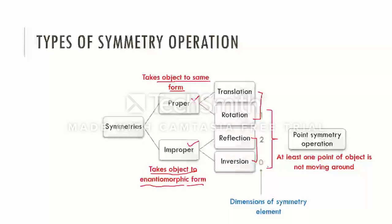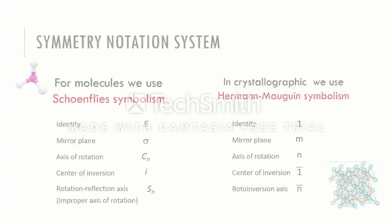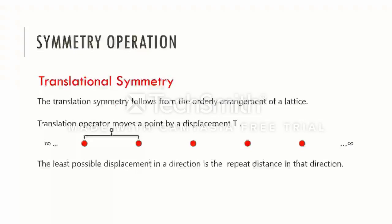Rotation, reflection, and inversion are also point symmetry operations. The actions in which at least one point of the object is not moving around are point symmetry operations. Two types of symmetry systems are in use. One is Schoenflies system, which is nowadays mainly used to describe the symmetry of molecules or finite objects that show point symmetry only. And the other is Hermann-Mauguin. Hermann-Mauguin symbolism is standard notation for the symmetry in the crystalline world. Here, not only point symmetry is present, but translational symmetry is also there. Now we will discuss each type of basic symmetry operations one by one.